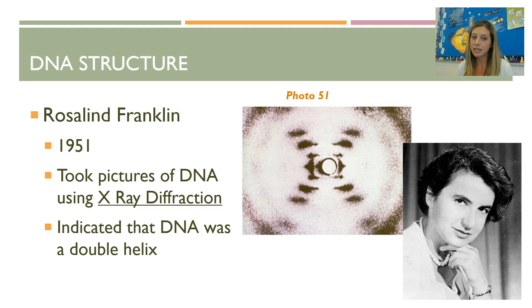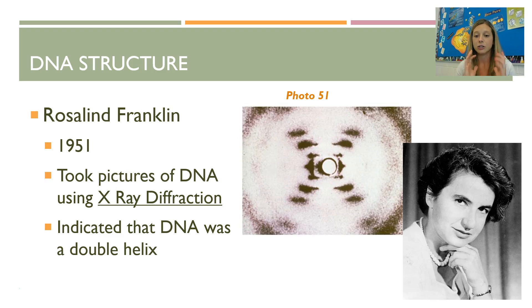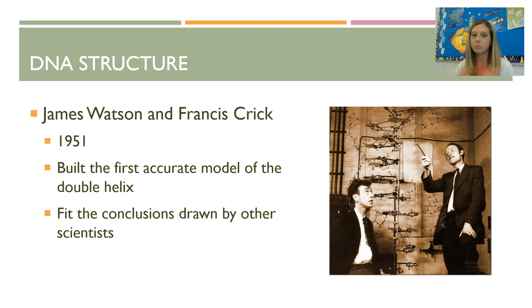Another scientist around the same time was Rosalind Franklin, using a technique called X-ray diffraction — essentially taking pictures by bending X-ray radiation around certain molecules. She took a famous picture called Photo 51 that indicated DNA was a double helix, with a double spiraling shape. That was her big contribution — this picture allowed Watson and Crick to conclude that DNA was a double helix, the missing piece that let them build the first accurate model.